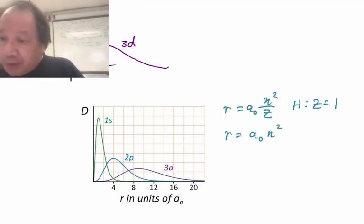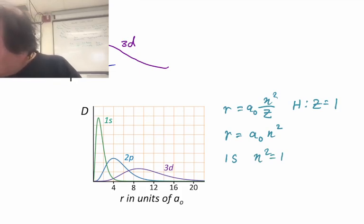We have 1s, which has n squared, n is 1, so n squared equals 1. And therefore, r will be equal to a0.